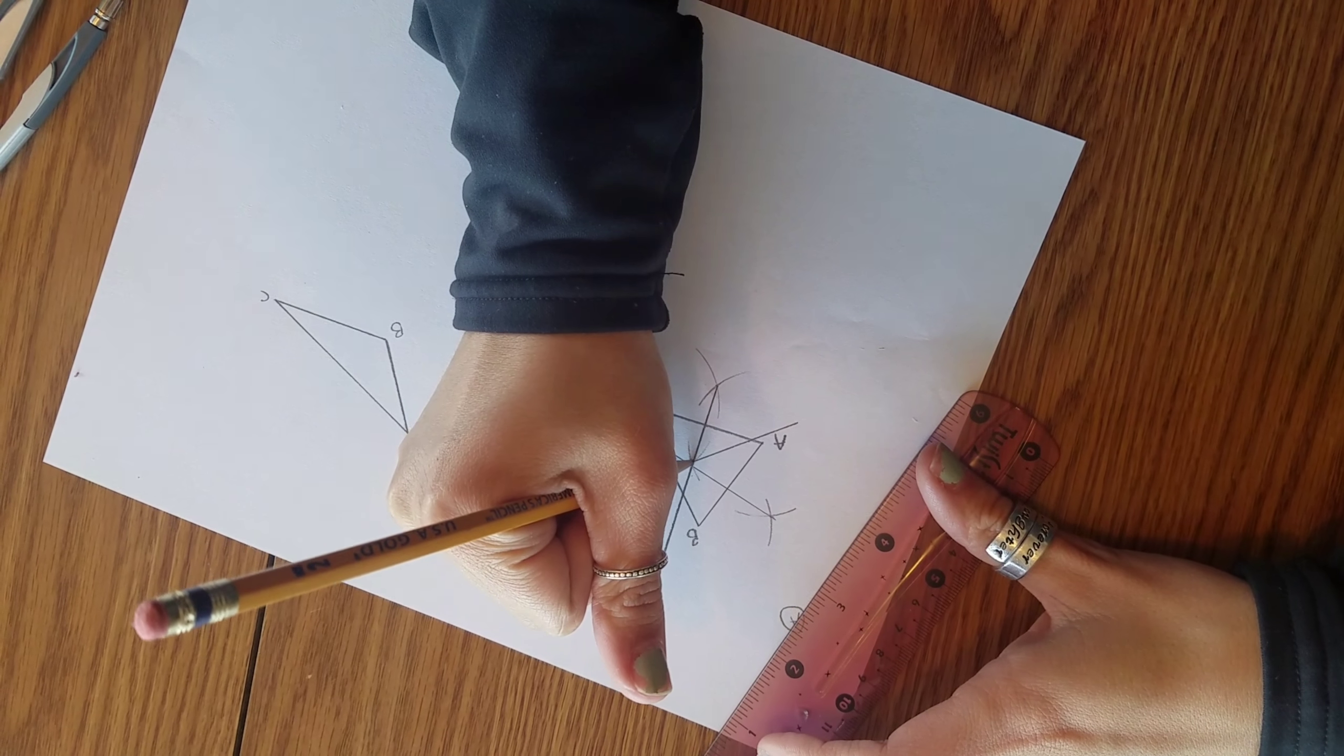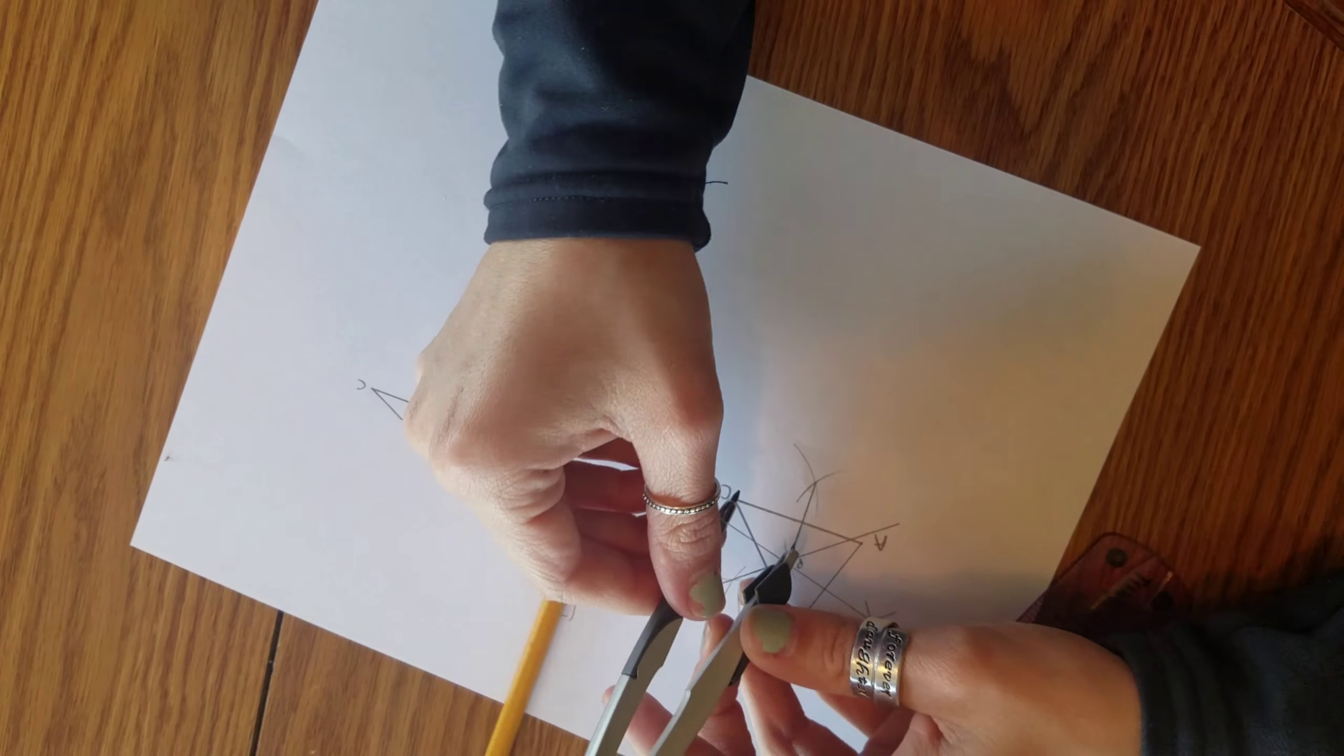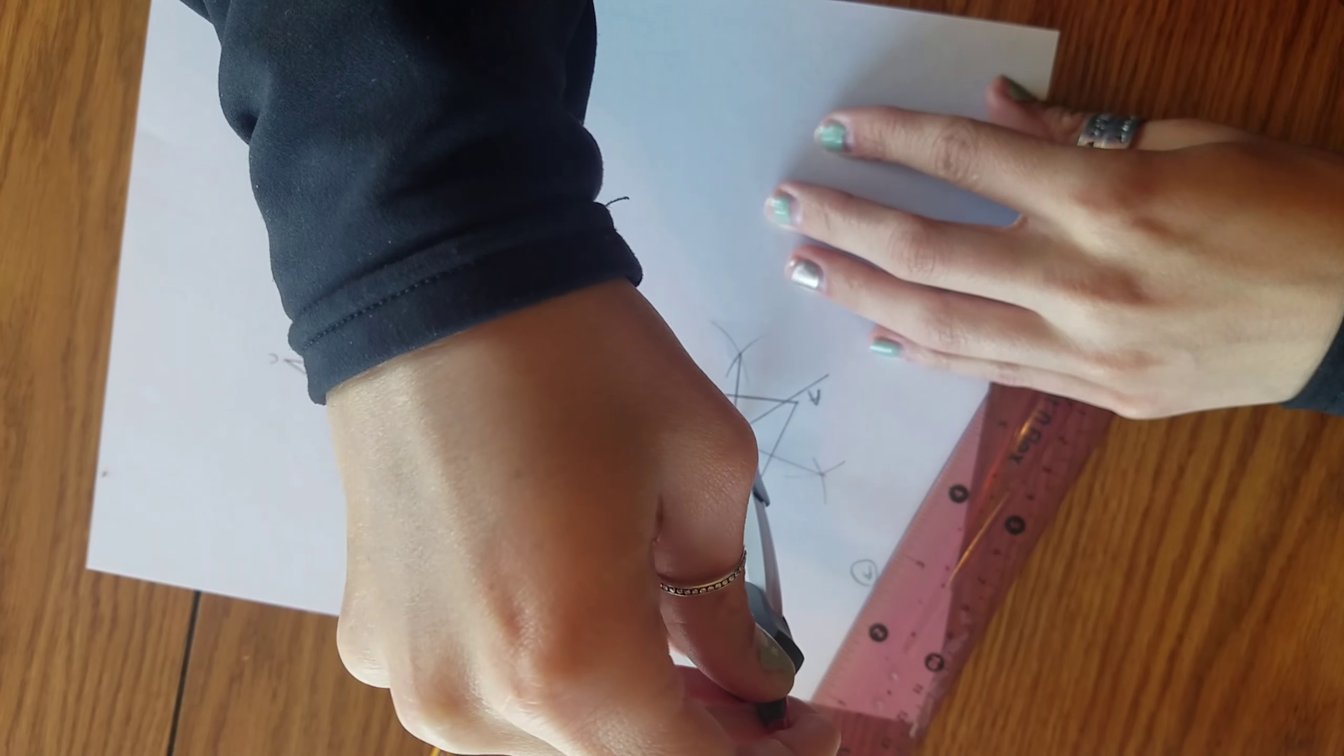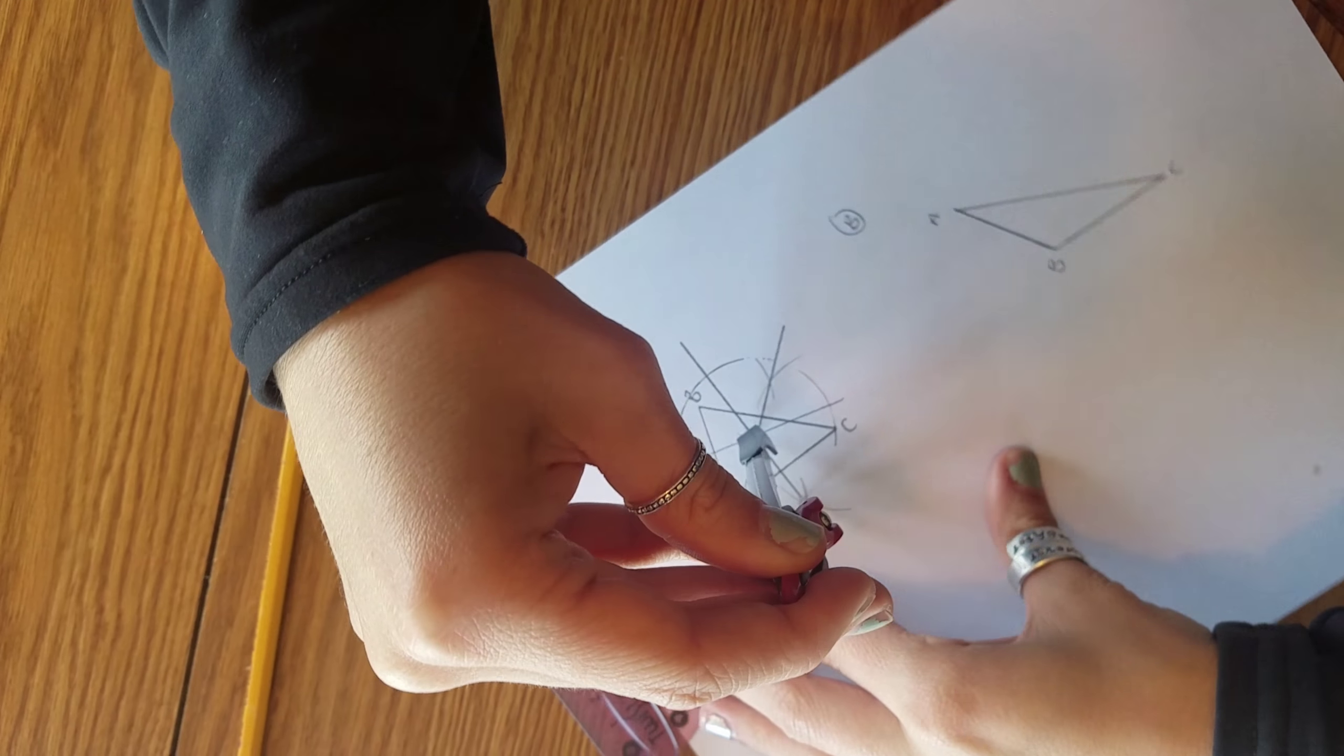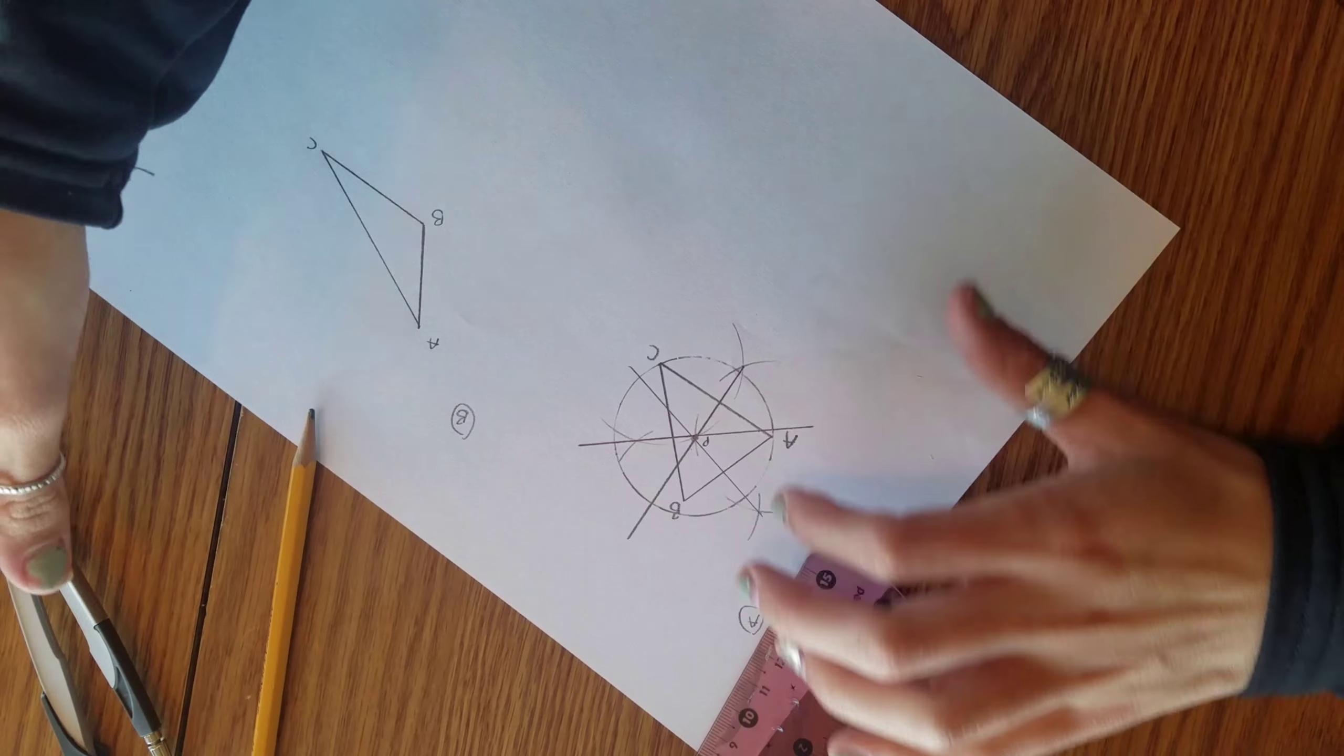And here we have an intersection of all three points. Using our compass, we are going to put the pointy end on point P and make it the distance to one of the vertices. If we did all of our measurements exactly precise, it should touch each vertex A, B, and C. Compasses aren't always exact, so we were just a little bit off here, which just means that our compass got a little bit shaky when we were making our intersections.